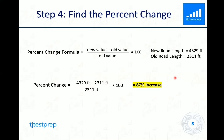So for this problem, we know we are finding for a percent increase because it's stated by the problem. So basically, what we can do is subtract the old road length, which is 2,311 by the new road length, which is 4,329. And then divide that whole quantity by 2,311, which is the old road length. And then lastly, we can multiply that whole thing by 100. And then that would give us 87% increase in the two slopes. And that would be our answer.